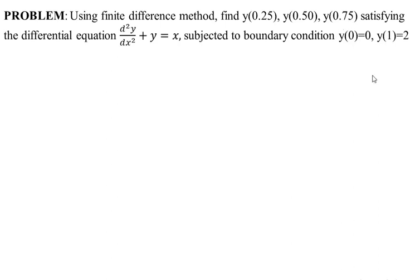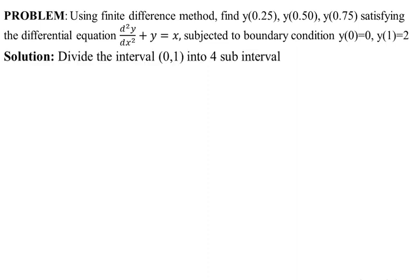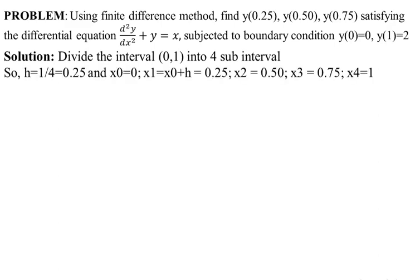By observation, there are four intervals. We divide the domain from x = 0 to x = 1 into four sub-intervals. The step size h = (xₙ − x₀)/n = (1 − 0)/4 = 0.25. So: x₀ = 0, x₁ = 0.25, x₂ = 0.50, x₃ = 0.75, and x₄ = 1.